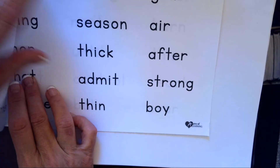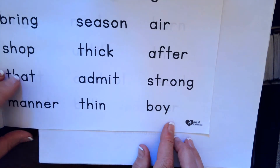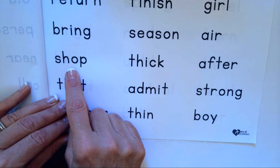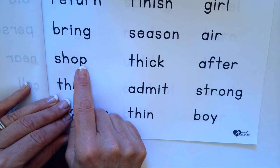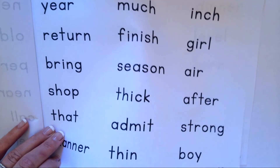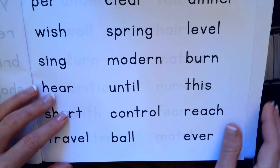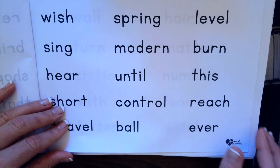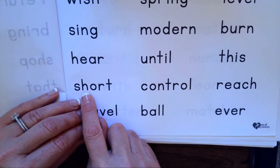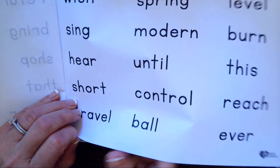Next one: O-Y makes oi, B-O-Y, boy. S-H makes sh, S-H-O-P, shop. Next one: S-H makes sh, O-R makes or, S-H-O-R-T, short.